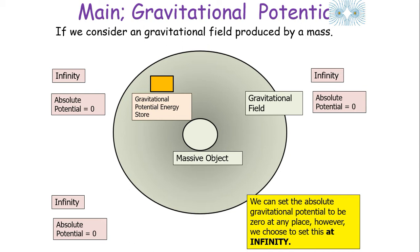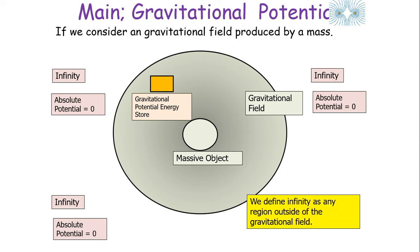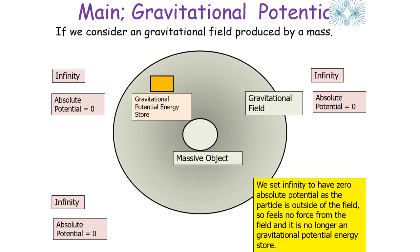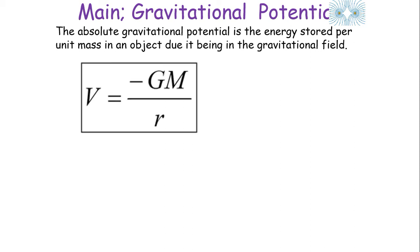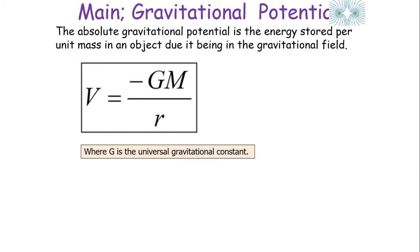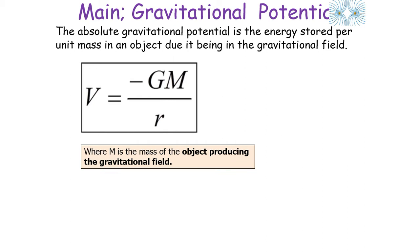At infinity, the absolute potential of an object is always zero. We define infinity as any region outside of the gravitational field, or when the distance between the massive object and the gravitational potential energy store is very, very large. We set infinity to have zero absolute potential because the particle is outside of the field, so it no longer feels a force and can no longer be a gravitational potential energy store. The absolute gravitational potential is calculated using V = −GM/R, where G is the universal gravitational constant, M is the mass of the object producing the gravitational field, and R is the separation between the object in the field and the object making the field.